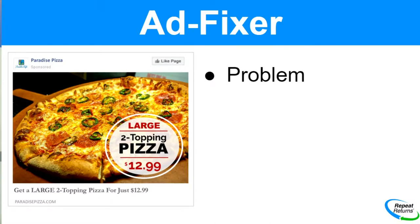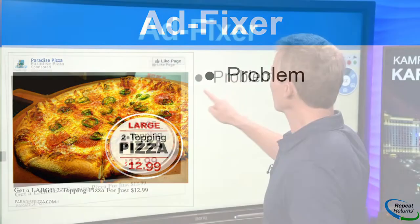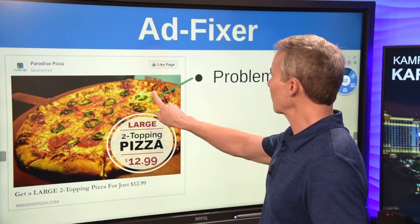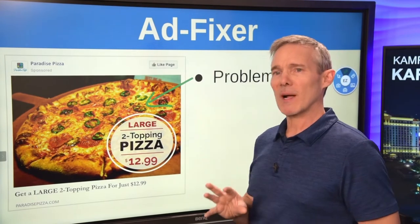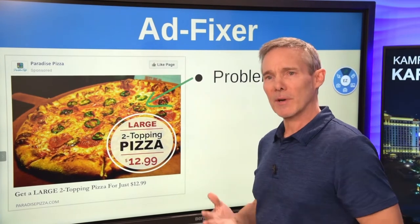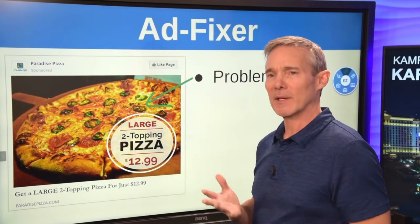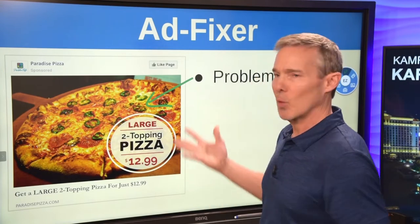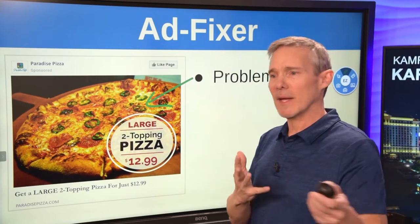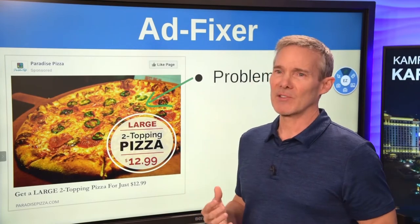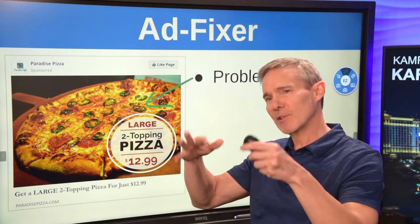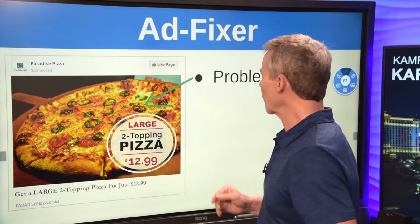The persuasion equation hits four — what we call the four P's. The first is that we need to address the problem. The initial problem we're addressing for the person at home looking at the ad is: we have pizza, they need pizza. But the thing is, everybody's advertising pizza, so you're still just lost in the crowd.